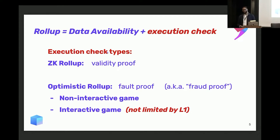For data availability, the data you're posting back to L1, you need to be able to derive it. You need to consume that data to derive the rollup chain. The execution check is the process of actually checking that the data that was posted matches what you expect for the rollup. In the case of a ZK rollup, it's just a validity proof. For an optimistic rollup, it's a fault proof or fraud proof.